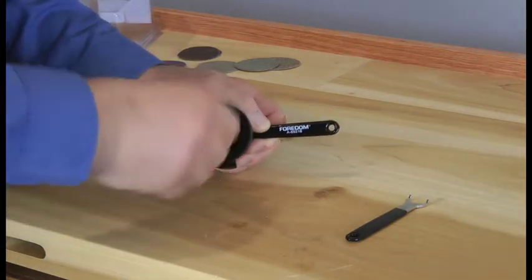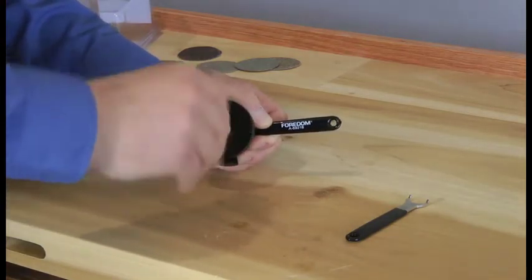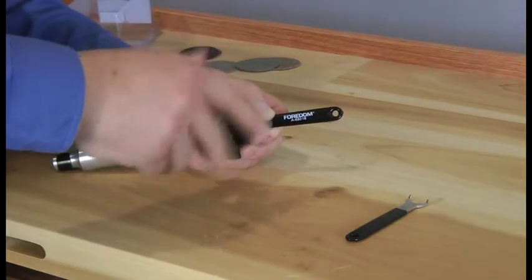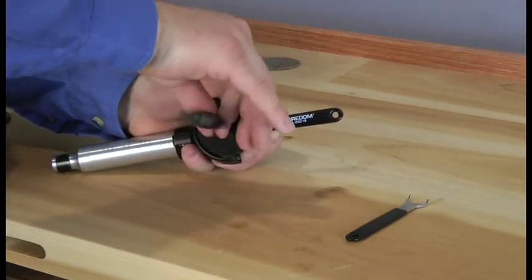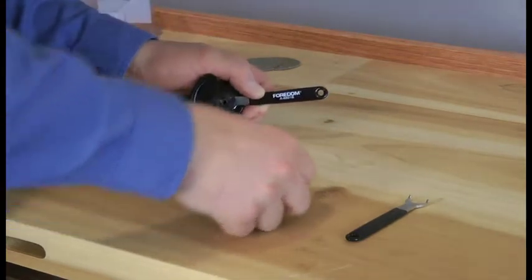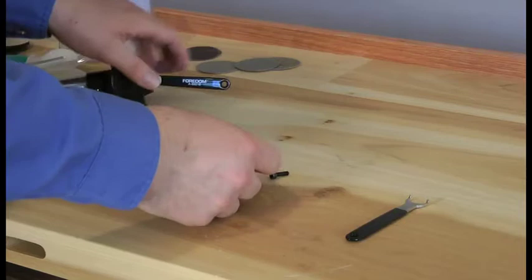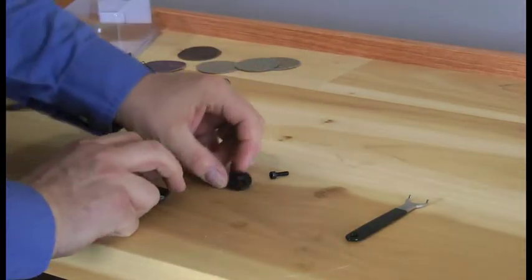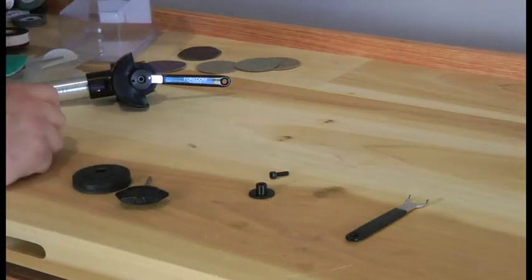Now I'll remove this velcro hook sanding head and we'll put on a grinding wheel. Always remember to remove your inner arbor and outer arbor there.